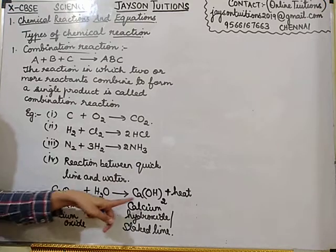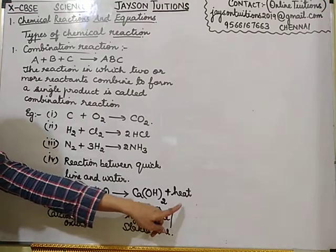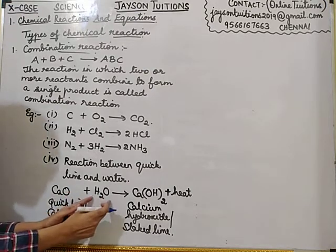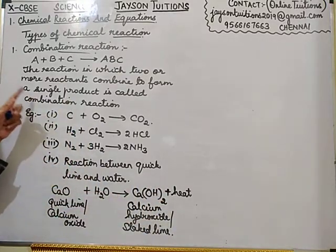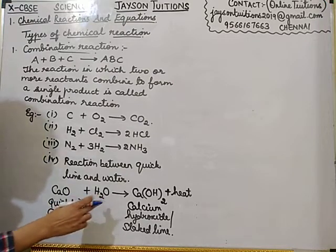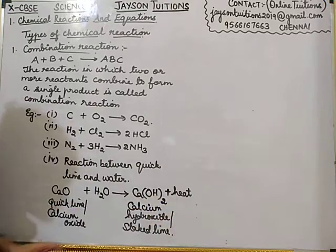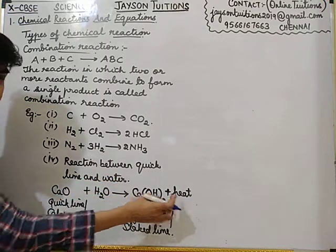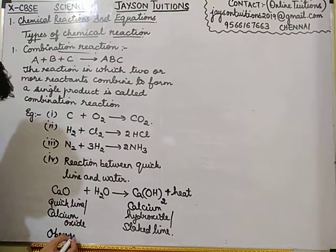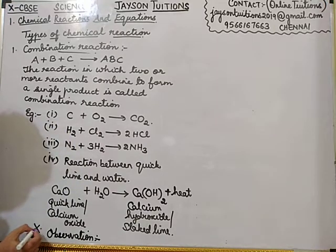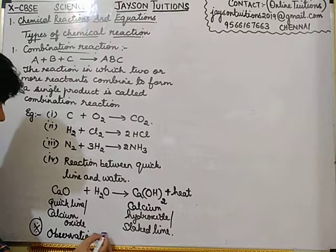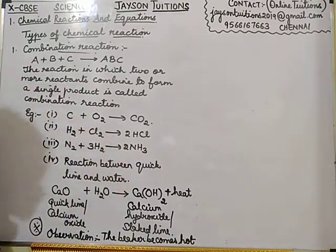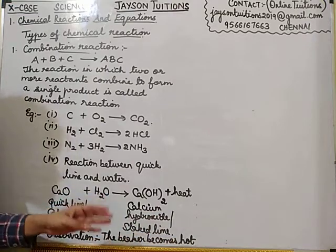When quicklime reacts with water, it forms calcium hydroxide — that is slaked lime — and heat. As you can see, this is one reactant, this is another reactant, and these two reactants combine to form a single product. So it is an example of combination reaction. When you do this in a beaker, because heat is released, when you touch the outer side of the beaker, you can feel the heat.